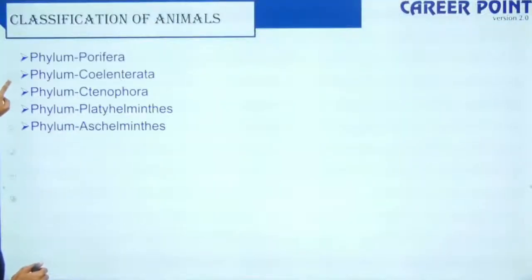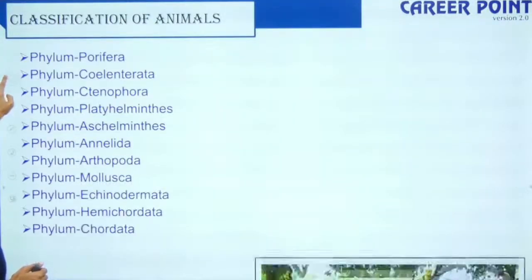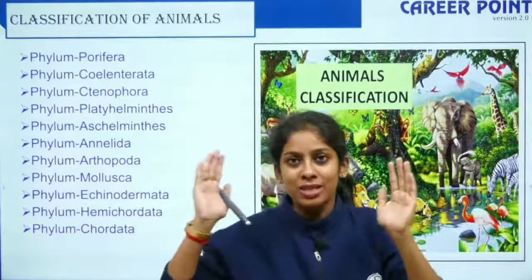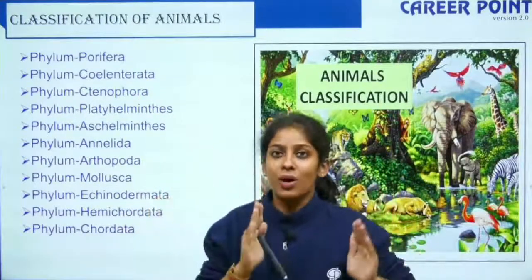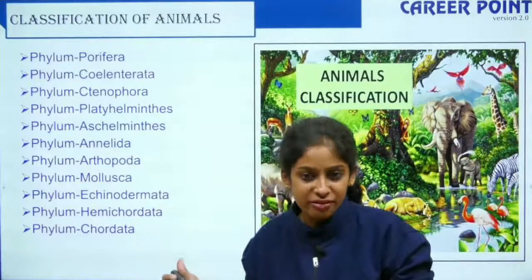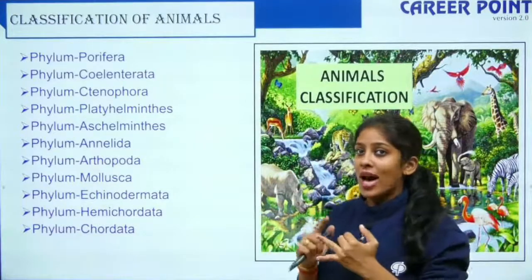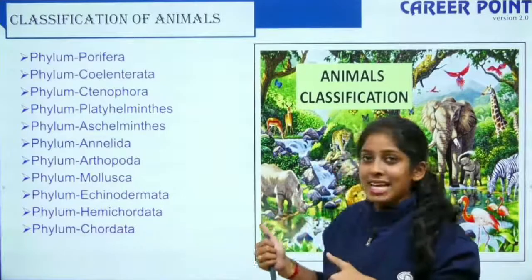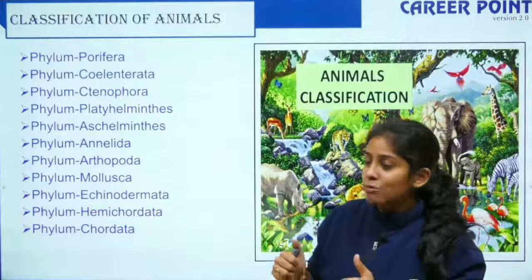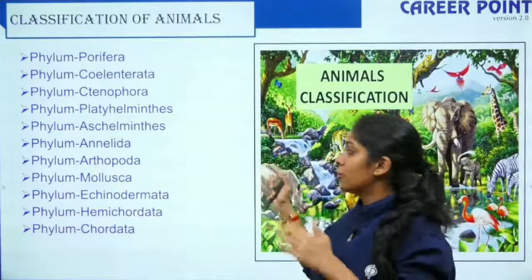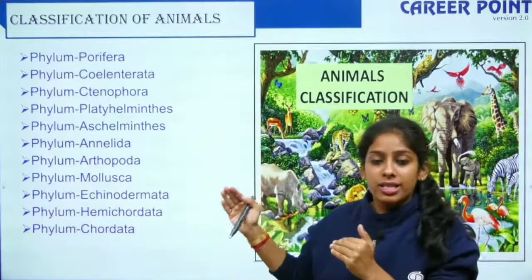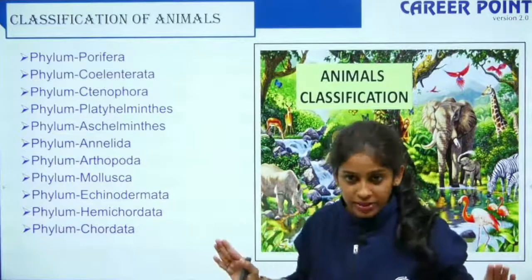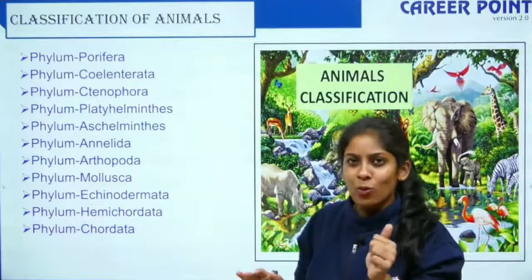So here we go with animal kingdom. When you talk about animal kingdom, the kingdom is Animalia, and under that you have phyla — eleven phyla. You have Porifera, Coelenterata, Ctenophora, Platyhelminthes, Aschelminthes, Annelida, Arthropoda, Mollusca, Echinodermata, Hemichordata, and Chordata.